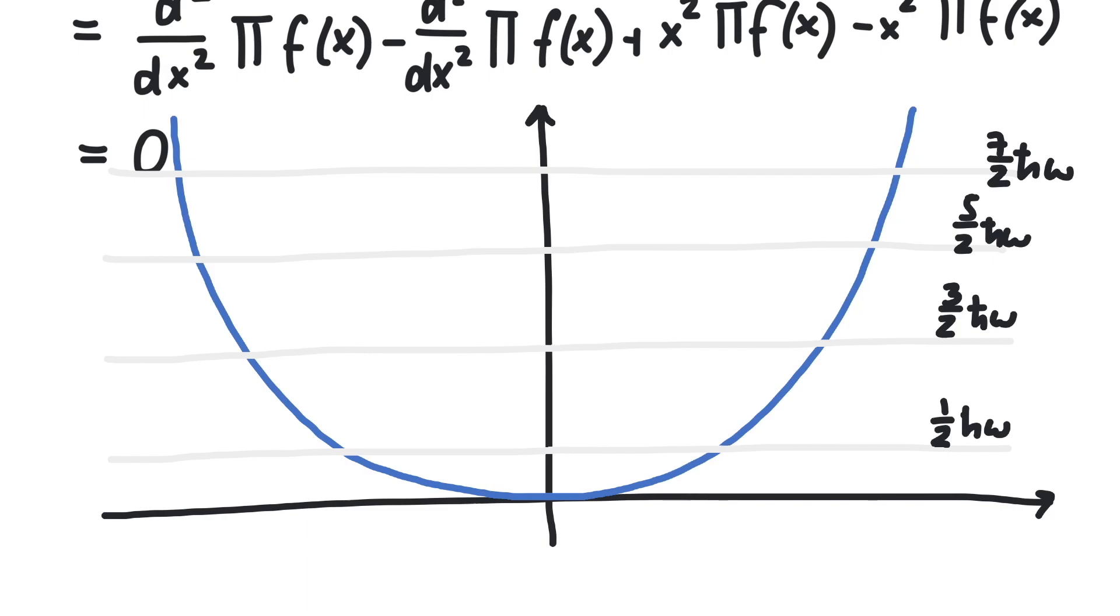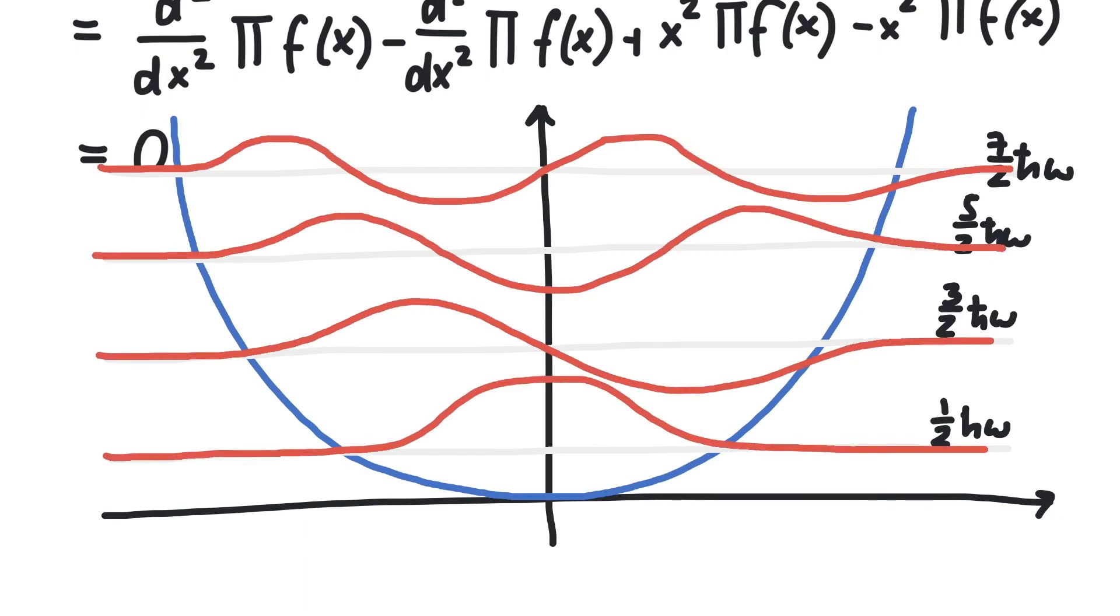And the functions themselves look like this. We see that the ground state and the second excited state both have even parity. This means they are symmetric with respect to the vertical axis. And the first and third excited states, they are both odd. And the fact that the parity operator commutes with the Hamiltonian tells us that these properties do not change over time.